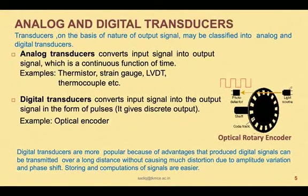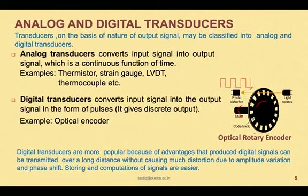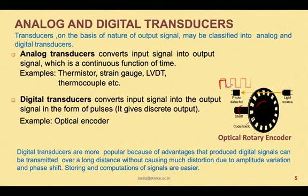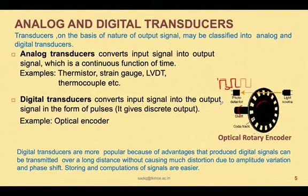When a shaft mounted with the encoder rotates, the encoder also rotates. As it rotates, light from the light source intermittently falls on the detector whenever an opening aligns with the light source and detector. Whenever light falls on the detector, a pulse is generated. When there is an opaque region, there is no light and no output. So whenever there is an opening there is an output, and whenever there is no opening there is no output. The output becomes digitized — either one or zero — and such an output is called a discrete output. An optical encoder is an example of a digital transducer.